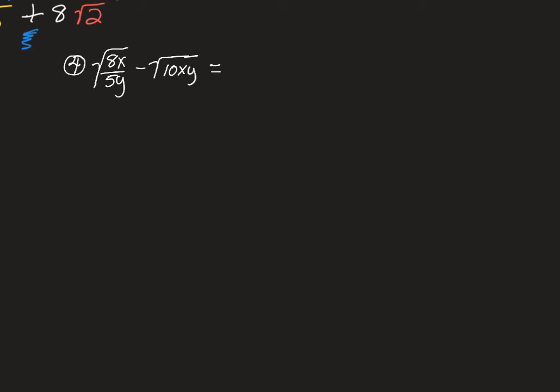Now, how are we going to deal with this? Well, we have a fraction there. We're going to have to get a common denominator at some point. But let's see if we can make the first term there simpler first. So let's rewrite this as square root of 8x over the square root of 5y, and then subtract from that our square root of 10xy. But we have a problem with this square root of 5y. We can't pull any perfect squares out of there, but we also cannot leave it as a radical in the denominator.